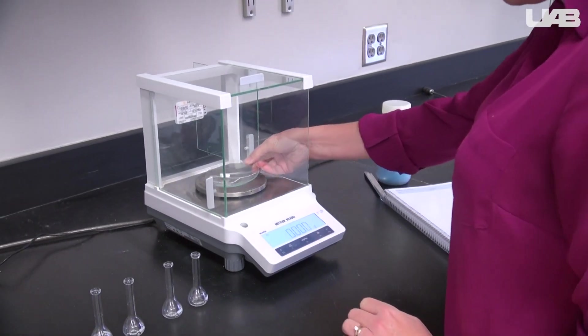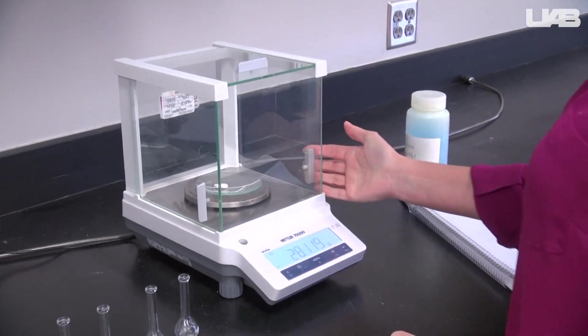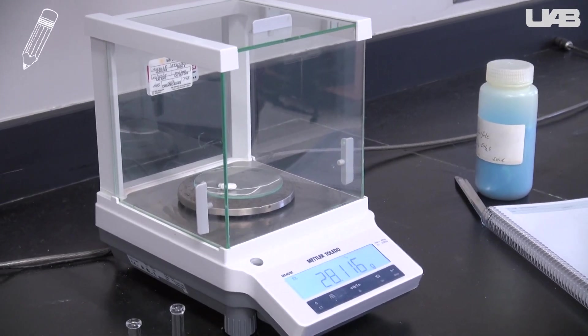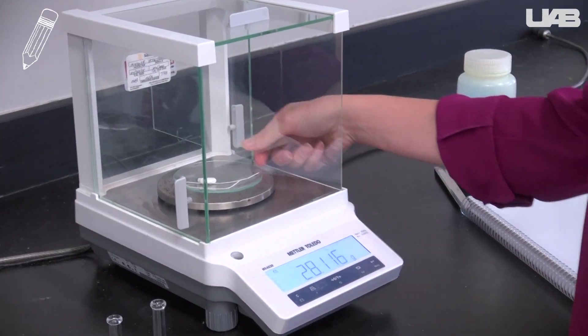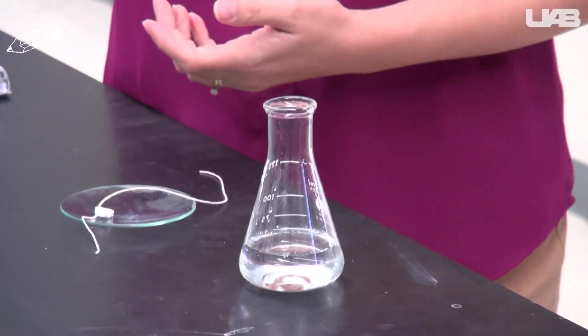Take the mass of the tablet, the watch glass, and string and write it in your notebook. This process will eliminate any tablet loss that would occur when the string flakes off some solid while you tie it.